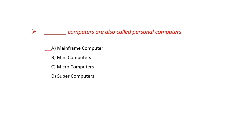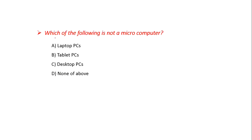Dash Computers are also called personal computers — Option A: Mainframe, B: Mini, C: Micro, D: Super. The answer is C: Micro Computers. Which of the following is not a micro computer? Option A: Laptop PC, B: Tablet PC, C: Desktop PC, D: None of the above. Friends, all three — Laptop, Tablet, and Desktop — are Micro Computers. So the answer is D: None of the above.